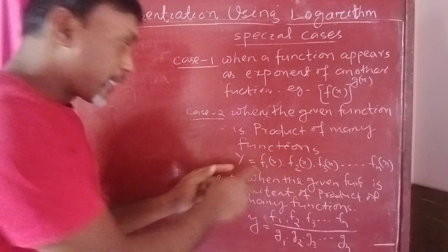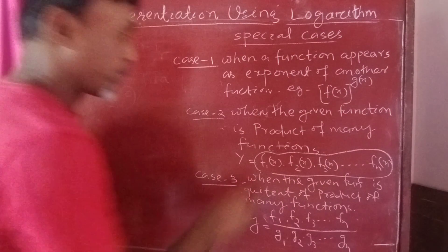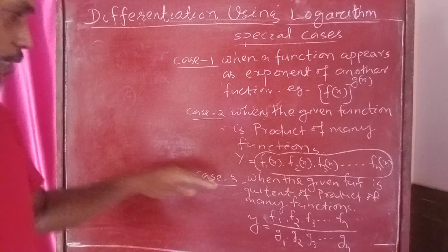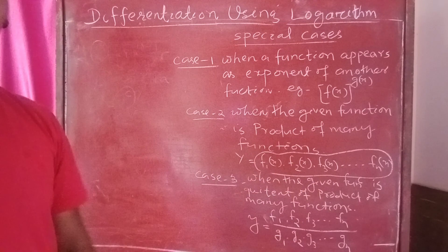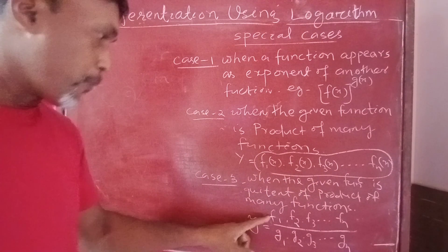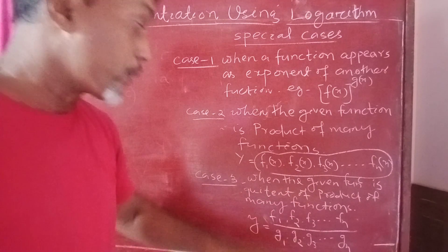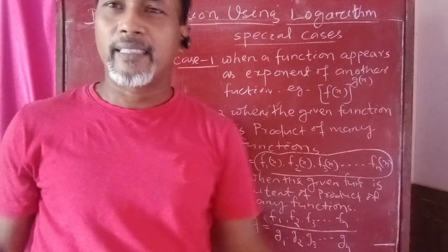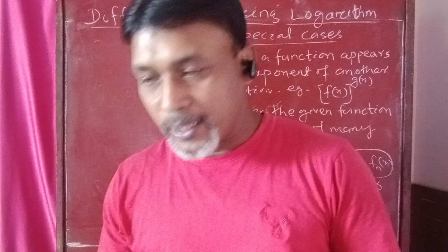The second case is when the given function is a product of many functions, that is, y equals f1(x) times f2(x) times f3(x) and so on. The third case is when the given function is the quotient of a product of many functions — function times function times function divided by function times function times function. These are the three special cases for using logarithm to differentiate a function.